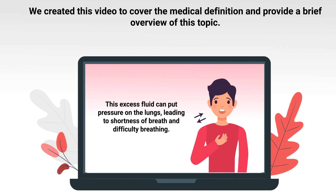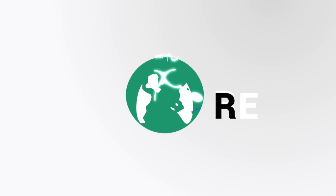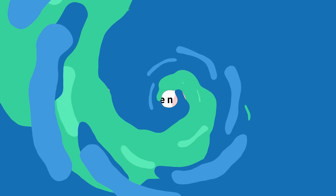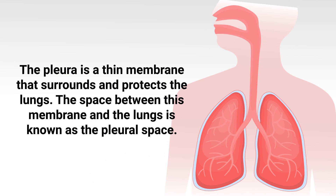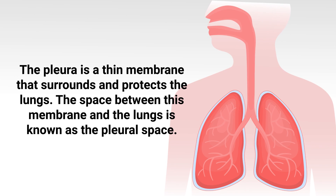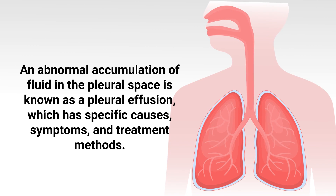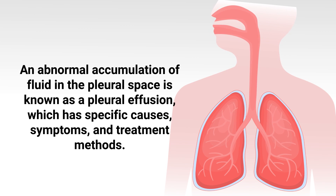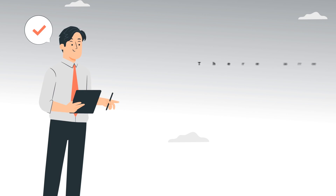We created this video to cover the medical definition and provide a brief overview of this topic. The pleura is a thin membrane that surrounds and protects the lungs. The space between this membrane and the lungs is known as the pleural space. An abnormal accumulation of fluid in the pleural space is known as a pleural effusion, which has specific causes, symptoms, and treatment methods.